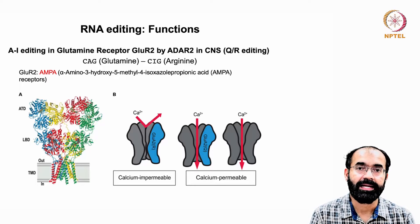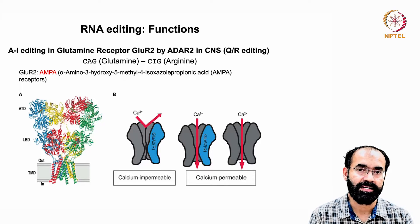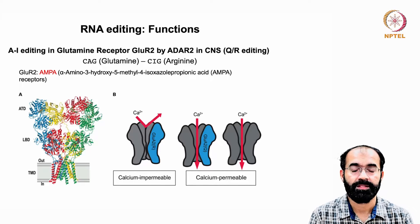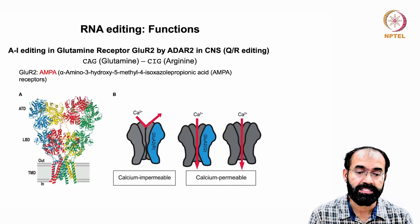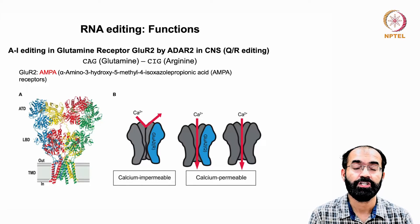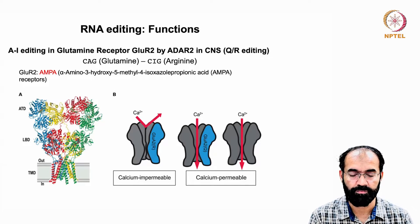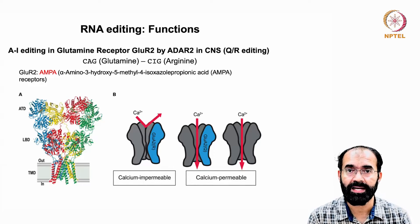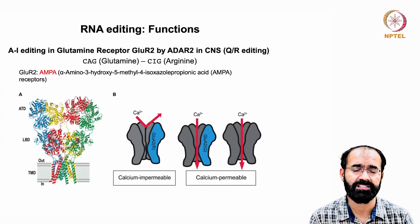The most important point is that the entire AMPA receptor in the central nervous system undergoes this change. The gene's default encodes glutamine, which allows calcium, but that is not desired. So wherever this subunit is expressed, this editing must occur to convert glutamine to arginine, ensuring calcium is blocked and only sodium enters to cause neuronal depolarization.